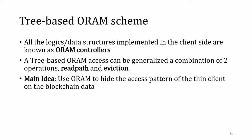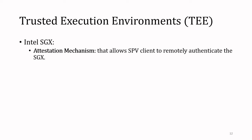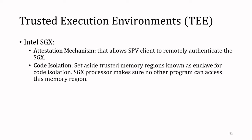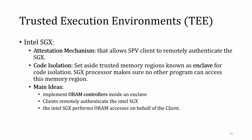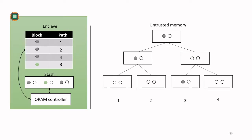The main idea of this work is to use ORAM to hide the access pattern of the thin client on the blockchain data. For the trusted execution environment, we use Intel SGX. There are two important properties we need from Intel SGX: first, the attestation mechanism, which allows a client to remotely authenticate the SGX enclave; and second, code isolation — Intel SGX sets aside a protected memory region known as the enclave, and the SGX processor ensures no other program can access it. We implement the ORAM controller inside the enclave, and the client remotely authenticates this Intel SGX, which then performs ORAM accesses on behalf of the client.